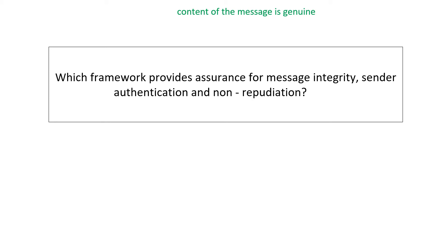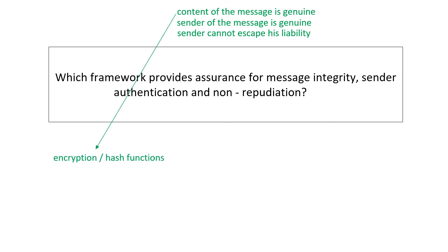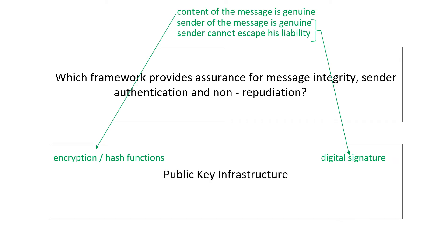Content of the message being genuine is what is meant by message integrity. The sender of the message being genuine is what is meant by sender authentication. And the sender not being able to escape liability is what is meant by non-repudiation. Message integrity can be established through encryption or a hash function, and the other two objectives can be achieved by digital signature. Both elements are covered in public key infrastructure. Hash functions and digital signatures will be discussed in detail in our next video.